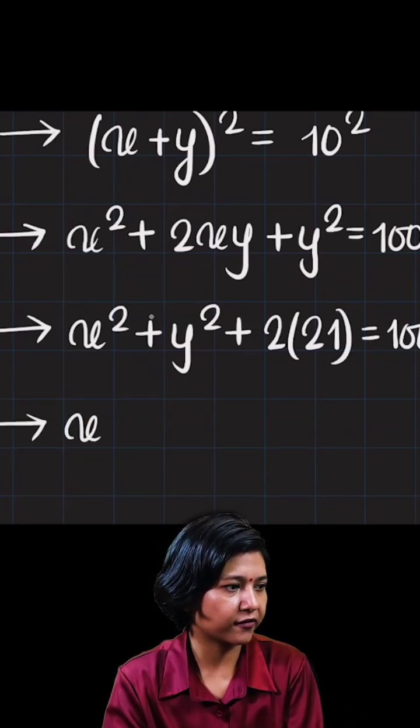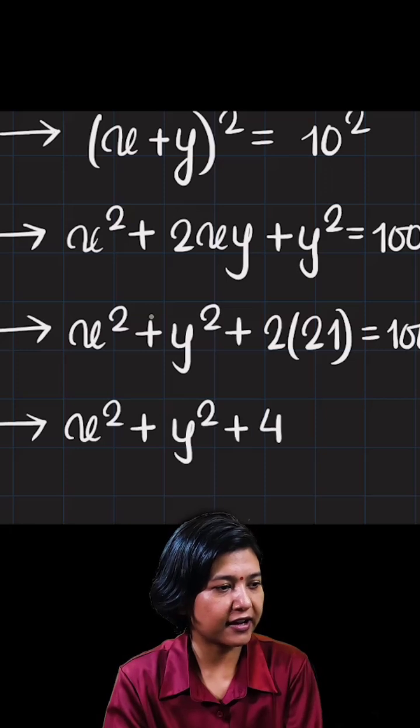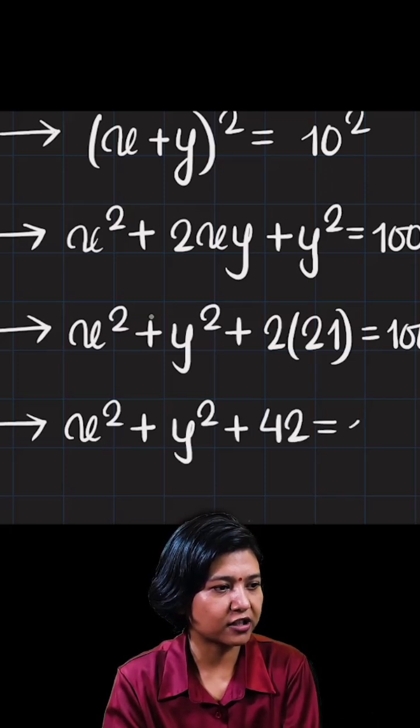2 times 21, double of 21 is 42. And then you have x squared plus y squared plus 42 equals to 100.